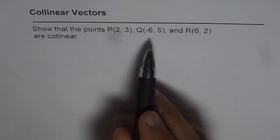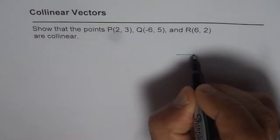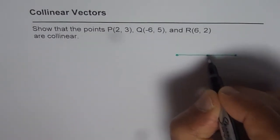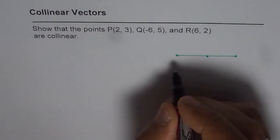When we say that the points are collinear, that means that they lie on the same line. So we are given three points and we have to just prove that they lie on the same line. So they are collinear.